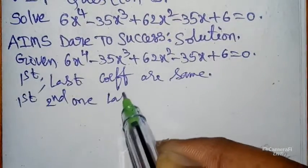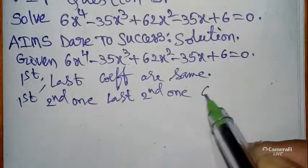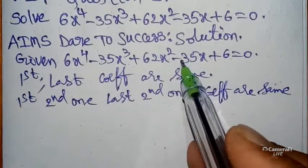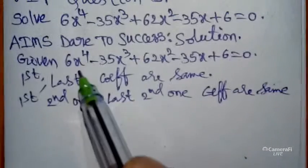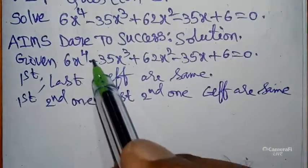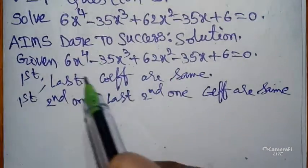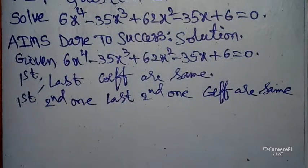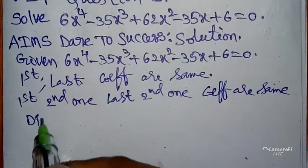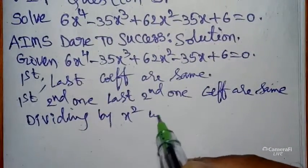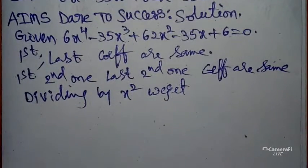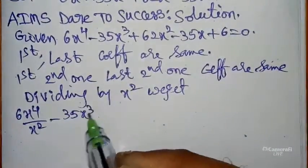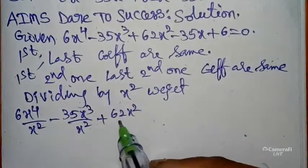Also, the second coefficient and the second-to-last coefficient are the same: the x³ coefficient is minus 35, and the x coefficient is also minus 35. Since the highest degree is 5, this is a 5th-degree equation. You can verify these two concepts. If you identify this pattern, you can use this concept — divide the given equation by x².